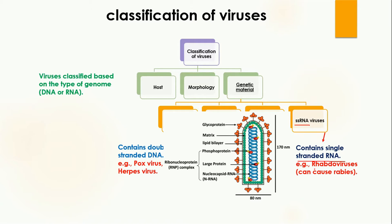The last type based on genetic material is single-stranded RNA virus, which contains a single strand of RNA. The example is rhabdovirus, which causes rabies. Rabies is a disease transferred from animals to humans through their saliva when humans are bitten. In this diagram, the blue structure is the single-stranded RNA.